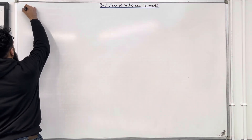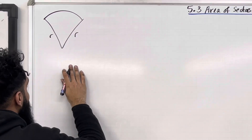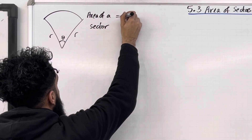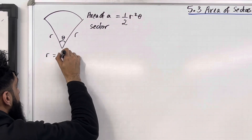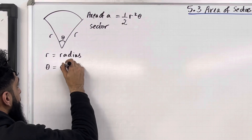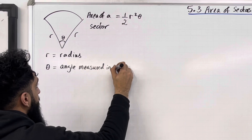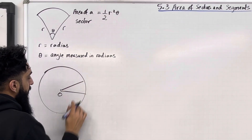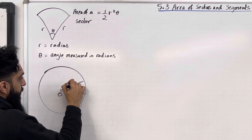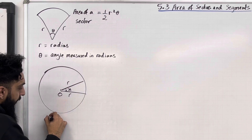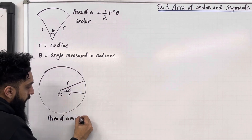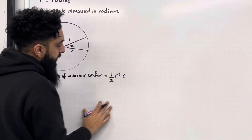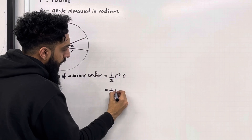Consider the following sector. Let R be the radius of the sector and let theta be this particular angle. The area of a sector is given by one half R-squared theta, where R represents the radius and theta represents the angle measured in radians. We also have a minor sector — suppose R is the radius and this angle is X. The area of a minor sector is given by the general formula: one half R-squared theta, but with theta equal to X, so we get one half R-squared X.